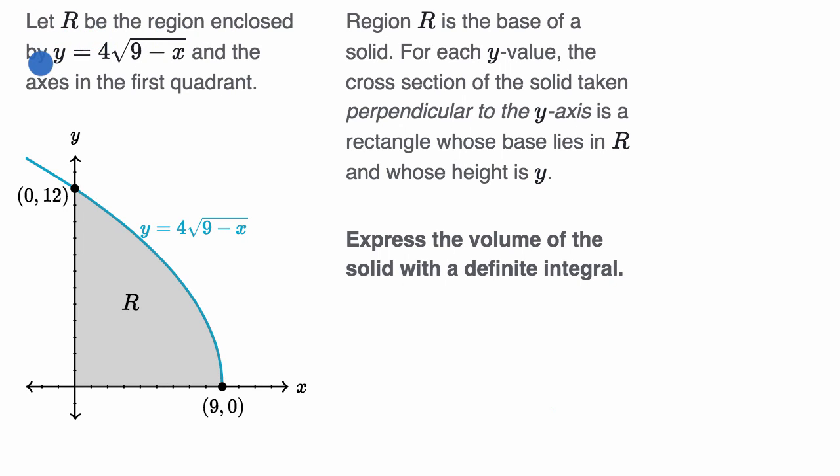Let R be the region enclosed by y equals four times the square root of nine minus x, and the axes in the first quadrant. We can see that region R in gray right over here.